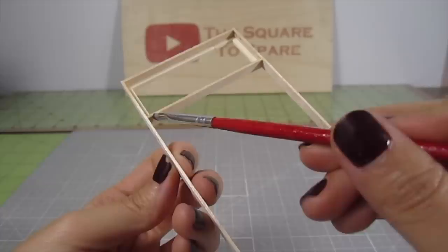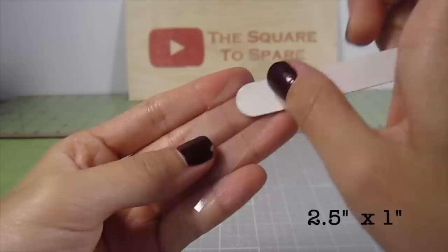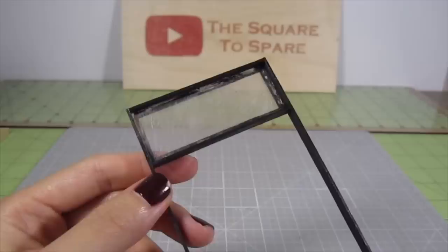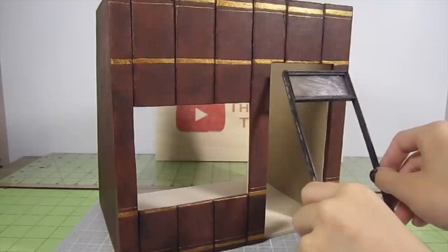Before we add in the glass, paint this entire frame black. Cut out a 2 1/2 by 1 inch rectangle from recycled plastic packaging and scratch it up a bit. Then place this piece into the frame. Build another matchstick frame of the same size, paint it black, and place it on top. This will hold the plastic in place. Now just glue the frame into the doorway opening.